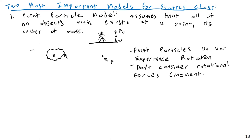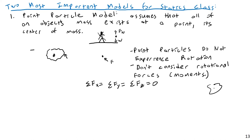Therefore, you don't need to consider rotational forces — torques and moments — for point particles. In statics, a lot comes down to balancing forces, sum of forces equals zero. For point particles, you don't have to worry about moments, so we only consider translational forces: the summation of forces in x, y, and z directions, all equal to zero. These are all translational forces — the object moving left-right, up-down, or forward-backward — not rotation about any axis.